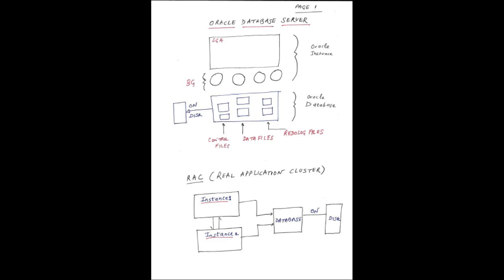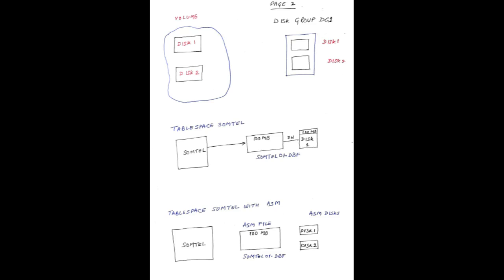Now we need to understand how a data file is created. When we create a tablespace, a data file is created. Let's say we create a tablespace with a data file of size 100MB — this space is allocated from the hard disk, which provides space to data files.